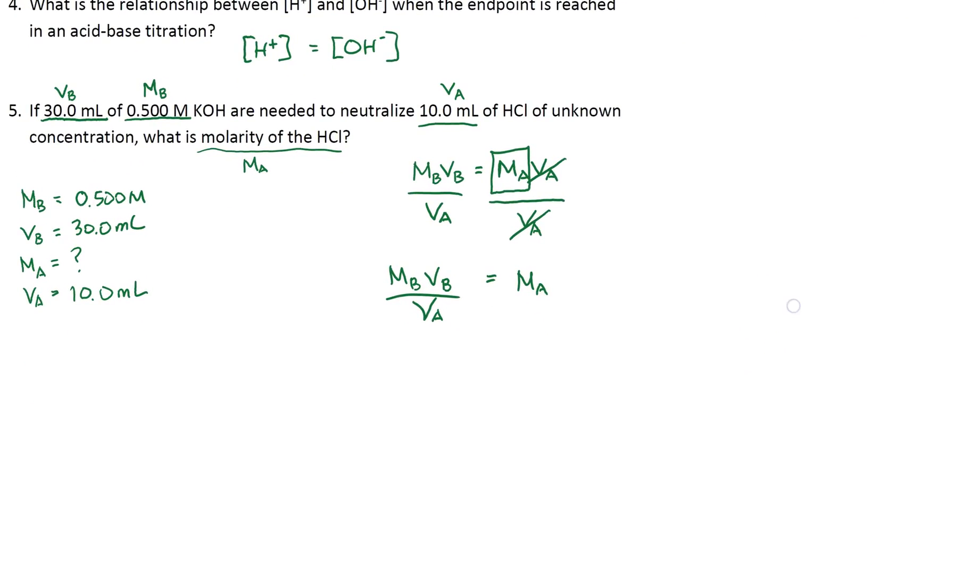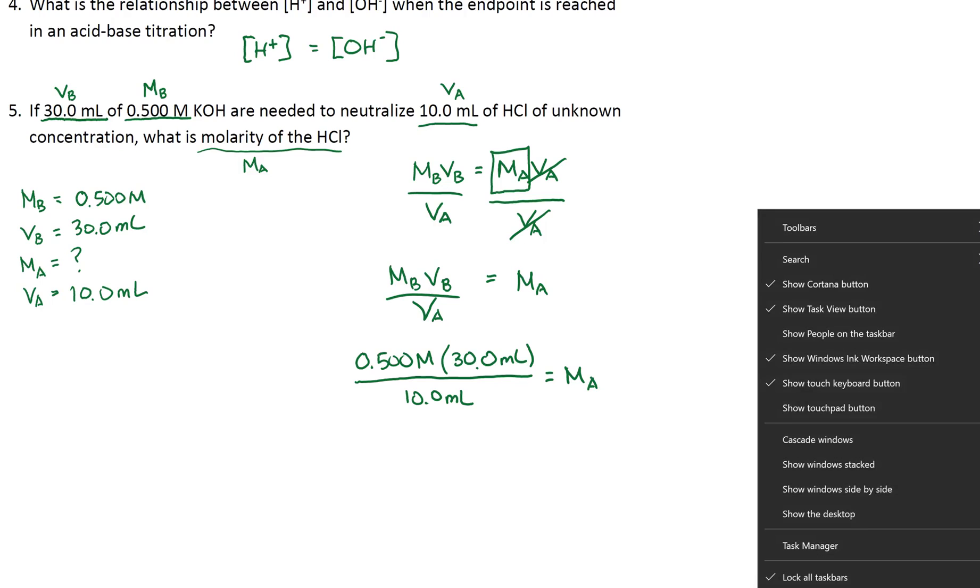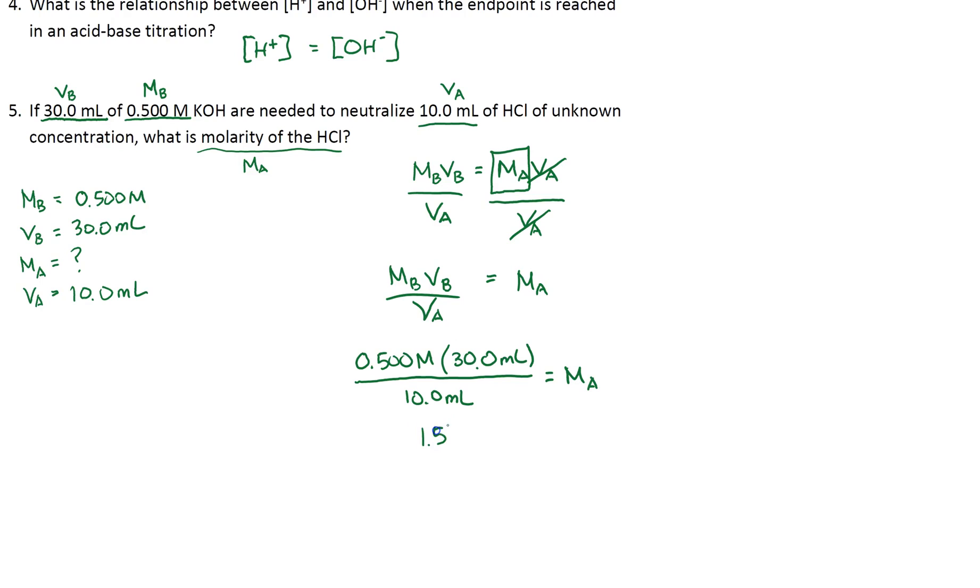Okay, so the next step, since I have my variable I'm looking for isolated, I'm going to be substituting my values, plugging in. So MB is 0.500 molar times my VB is 30 milliliters divided by VA is 10 milliliters. So once I do, I get 1.50 molar. So that's the concentration of my acid, 1.50 molar.